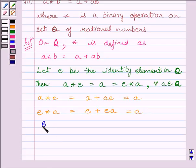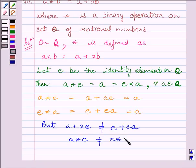But we know A plus AE would not be equal to E plus EA. So there does not exist any element E in Q with A plus AE equal to E plus EA, for every A belonging to set Q.